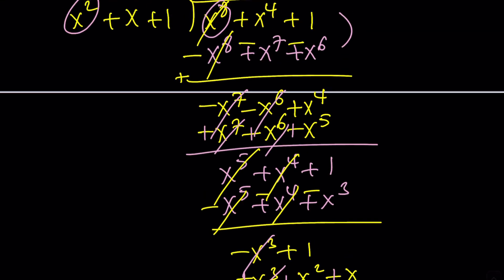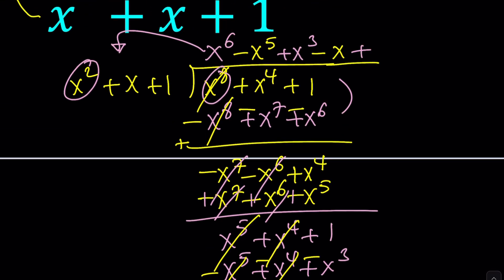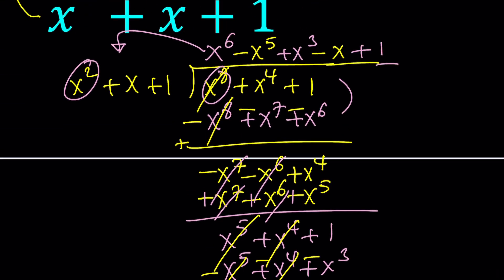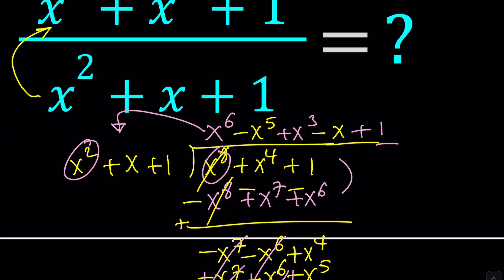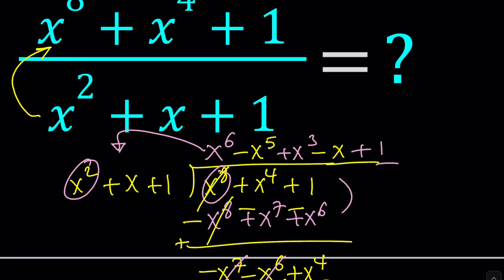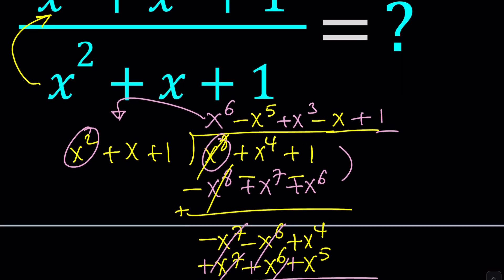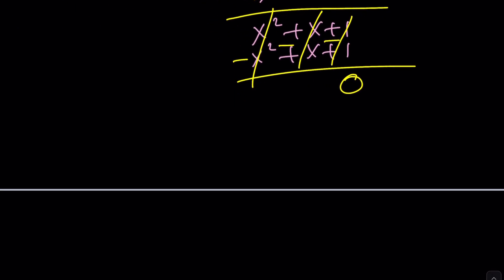And then, now we can bring down the 1 because we do need 3 terms. x squared goes into x to the 5th x to the 3rd times. And we're going to distribute that. x to the 5th plus x to the 4th plus x cubed. And now we're going to negate. Add them up. Cancel these out. And we're going to end up with negative x cubed plus 1. Does it go? It obviously does. What does that mean? It means that our expression, now let's go ahead and write this.